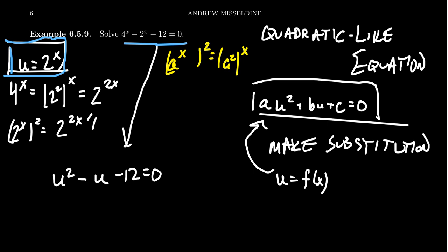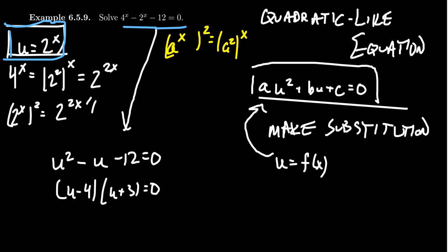We can solve this like any other quadratic equation, which I'm going to do by factoring. We need factors of -12 that add to -1. I can take (U - 4)(U + 3) = 0. Notice -4 times 3 is -12, but -4 plus 3 is -1. So we end up with U = 4 and U = -3.